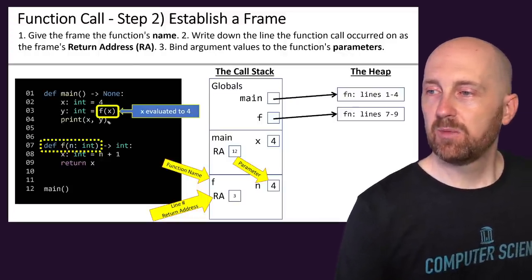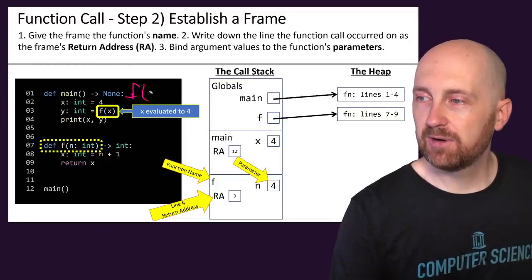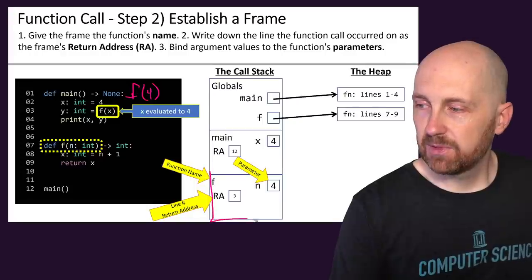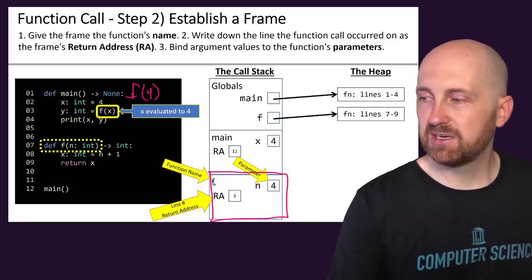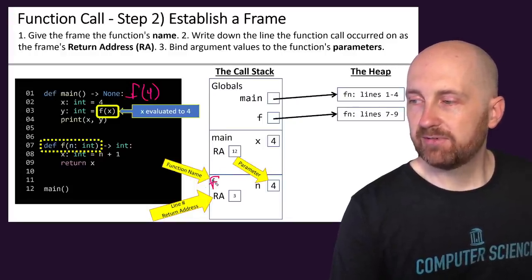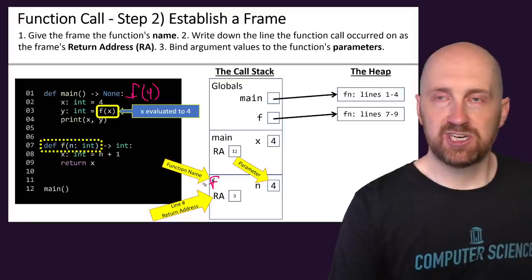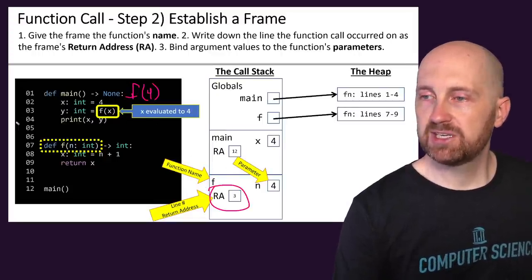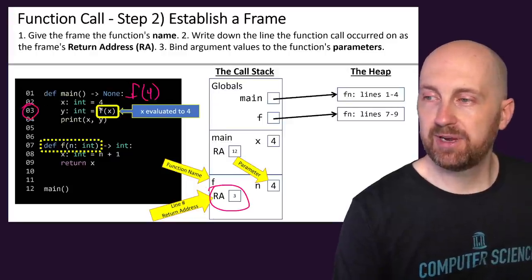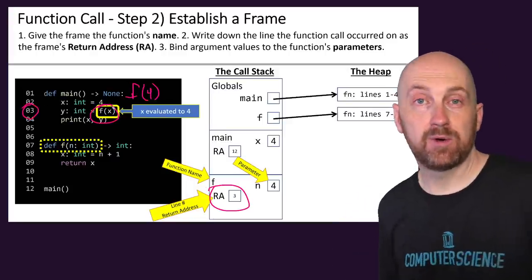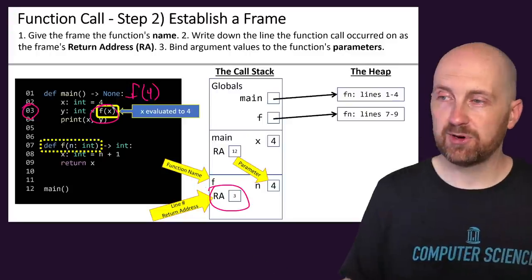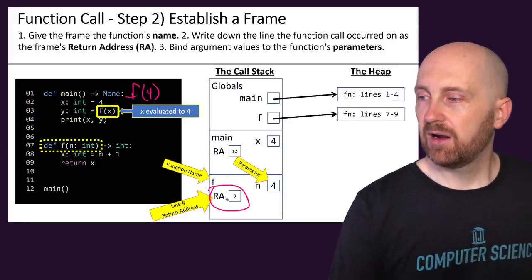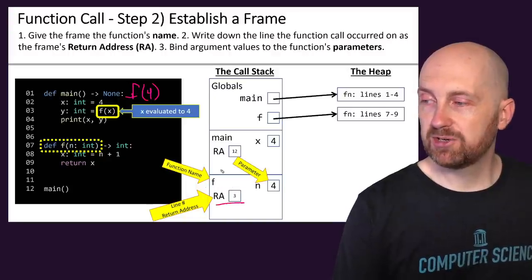We've got f(4) where we're at. We add a frame to our call stack — that's the new box — and we label that frame with the function name, which is f. Then we set up the return address: we're returning back to line 3, the line where we need to send the return value. Whatever this function returns, we'll send it back there. So we mark 3 as the return address (RA).